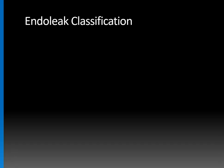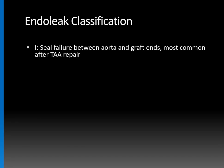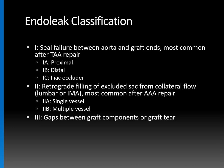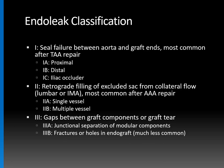Let's briefly review endoleak classification. Type 1 is seal failure between the aorta and the graft ends, most common after thoracic aortic aneurysm repair. Type 1a occurs at the proximal aspect, 1b at the distal aspect, and 1c at the level of the iliac occluder. Type 2 endoleaks occur from retrograde filling of the excluded sac from collateral flow, usually from lumbar arteries or the inferior mesenteric artery — most common after abdominal aortic aneurysm repair. Type 2a is a single vessel; type 2b is multiple vessels. Type 3 endoleaks occur from a gap between graft components or a tear in the graft: 3a is separation of components, 3b is a fracture or hole in the graft. Type 4 is graft porosity, and type 5 is endotension when the aneurysm sac increases for no apparent reason.